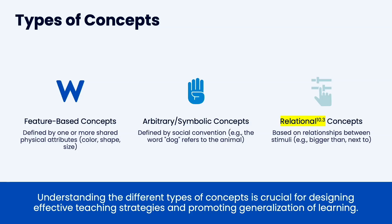By the time an individual decides they want to study trees, we may just need to teach clients what's a tree, what's a bush, what's a flower. In general, you might say bark or leaves, but sometimes other things also have those features, so you need to combine attributes. Sometimes a concept is arbitrary — like the word 'dog' referring to the animal. And sometimes it's relational, based on relations to other stimuli, like 'bigger' or 'large.'